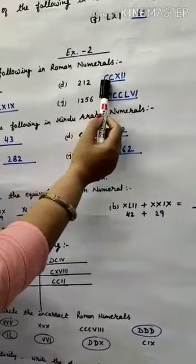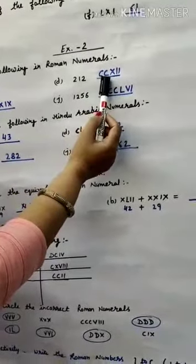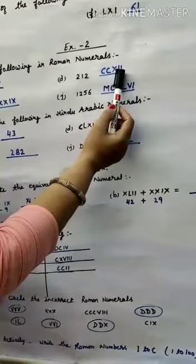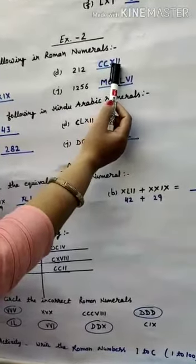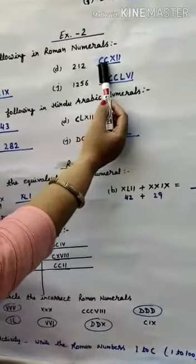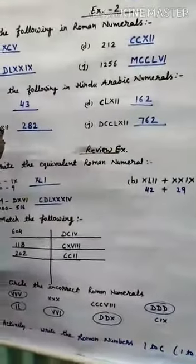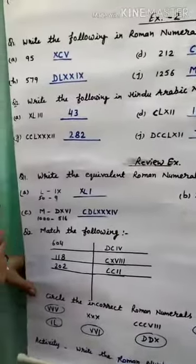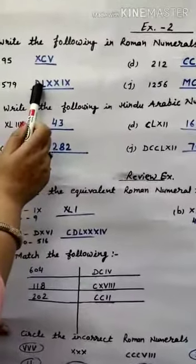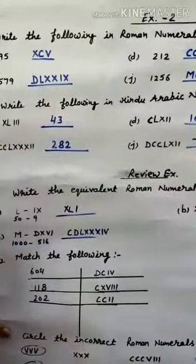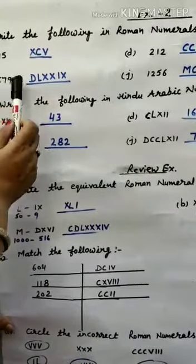For 212: CC makes 200, and for 12 we add II with X, so XII is 12. That gives CCXII for 212. For 579: D is the symbol for 500.